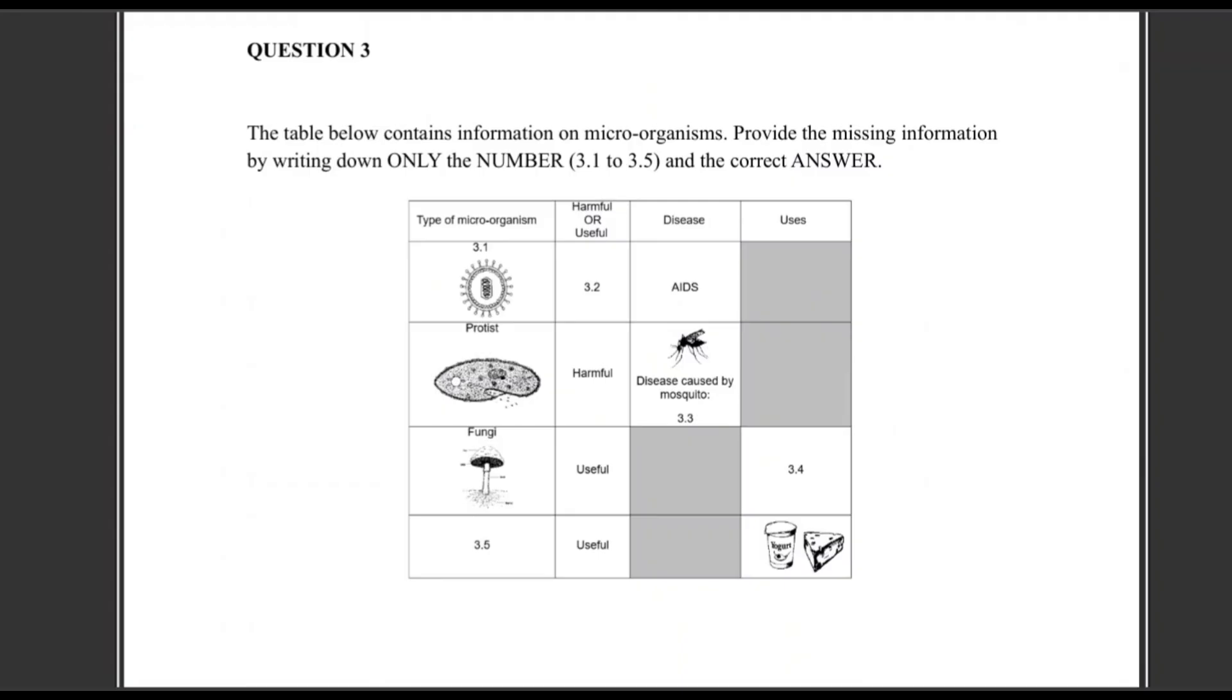All right, question 3: The table below contains information on microorganisms. Provide the missing information by writing down only the number and the correct answer. Obviously, these are instructions. These are test instructions when you're given the question paper and an answer paper. So we're just going to write all the answers. Let's understand our table. In this particular column, we're given a type of microorganism, which is basically the different groups. Then we need to indicate whether it's harmful or useful, then here it's the disease, then the uses. 3.1, let's identify the type of microorganism. So this is obviously a diagram of an HIV virus. That means the type of microorganism is a virus. Then 3.2, it's definitely harmful. It can't be useful at all. It's definitely harmful, and the disease is AIDS.